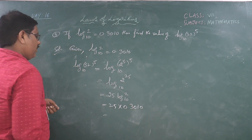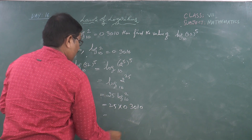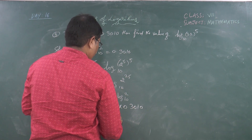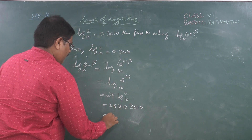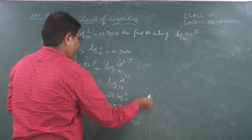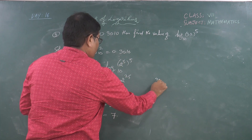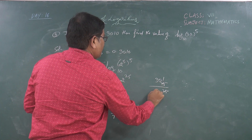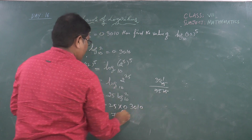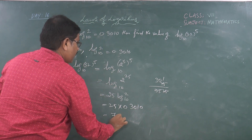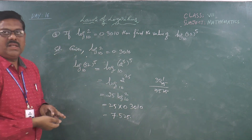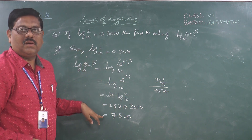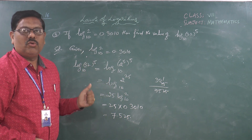So what will be the answer? 25 times 0.3010 equals 7.525. That is the required answer for this particular question. Now we will move to the next question.